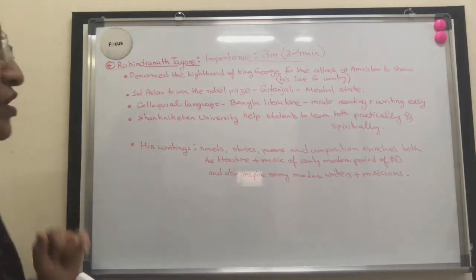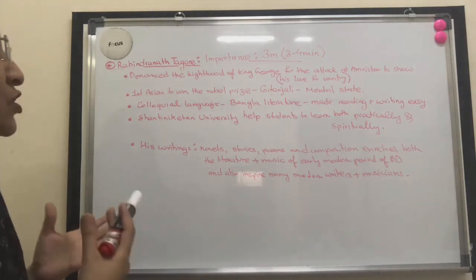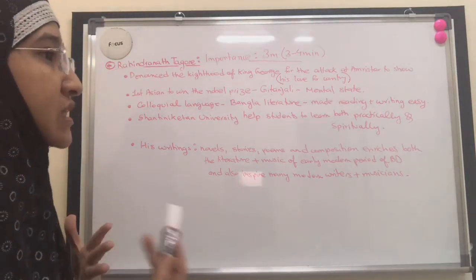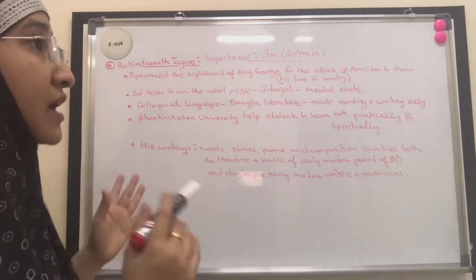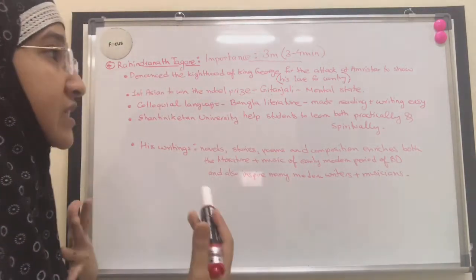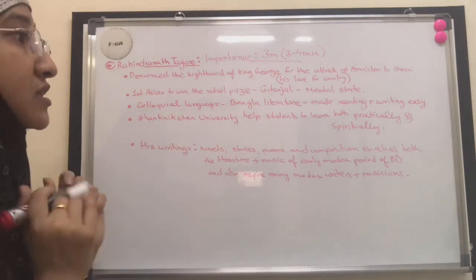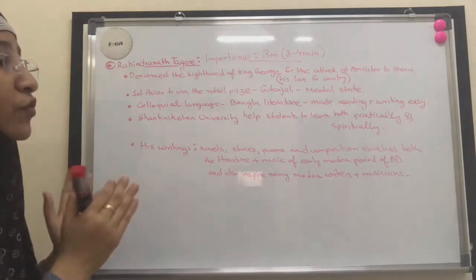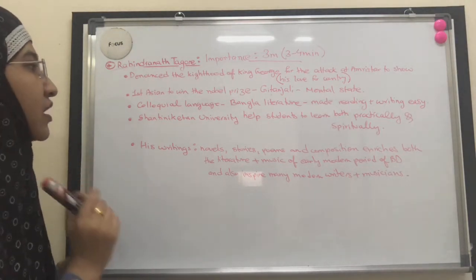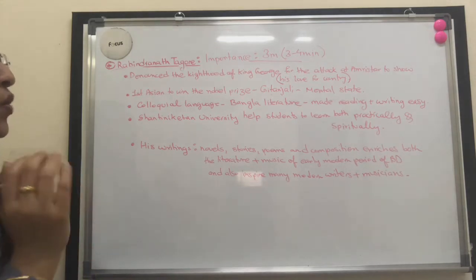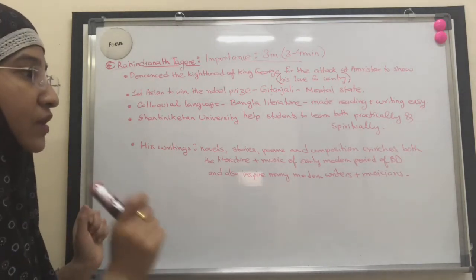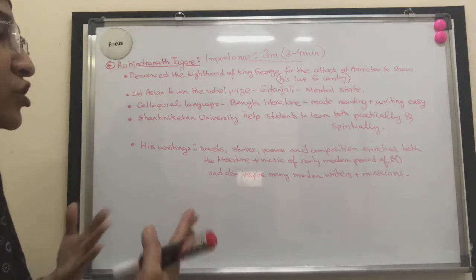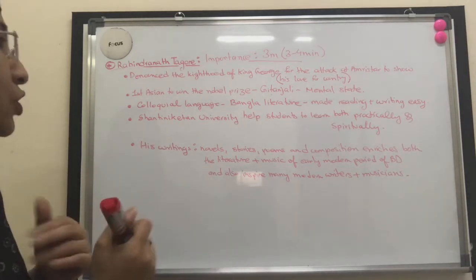The importance of Shantiniketan University is that Tagore established it so students could learn practically, spiritually, and theoretically — through books, nature, and real-world experience. Because he himself disliked rigid school rules and chose home schooling, he wanted a university where students would not only study from books but also connect closely with nature and gain practical knowledge alongside theoretical learning.